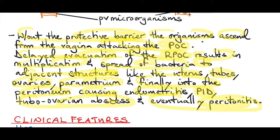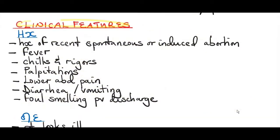Clinical features of a septic miscarriage: from the history, there will be a history of recent spontaneous or induced abortion. There will be fever, chills and rigors, palpitations, low abdominal pain because the infection is in the uterus, diarrhea and vomiting, and also a foul-smelling vaginal discharge.